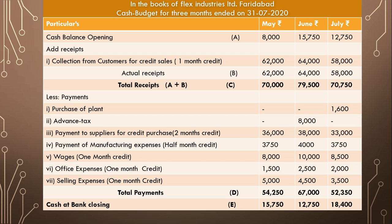The second adjustment: advance tax of rupees 8,000 is payable in March and June. We have to pay advance tax for two months — March and June — at rupees 8,000 each. Since we are not preparing the budget for March, we will show this expense only for June.